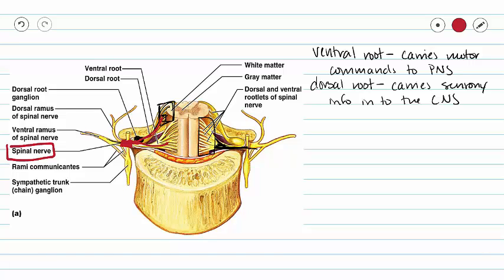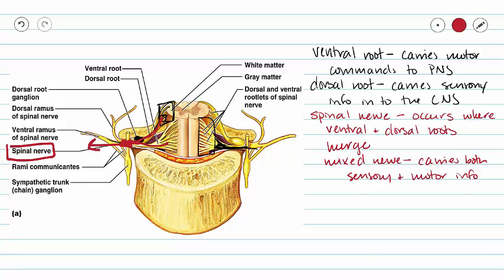So our spinal nerve is going to carry mixed information in that our spinal nerve and everything outwards is going to carry both sensory and motor commands. So now we're going to take a closer look at some of those spinal nerves.